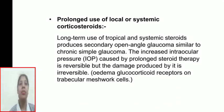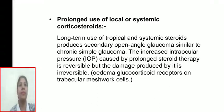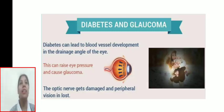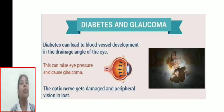Edema. Glucocorticoid receptors on trabecular meshwork cells are implicated. Diabetes can lead to blood vessel development in the drainage angle of the eye, raising eye pressure and causing glaucoma. The optic nerve gets damaged and peripheral vision is lost.